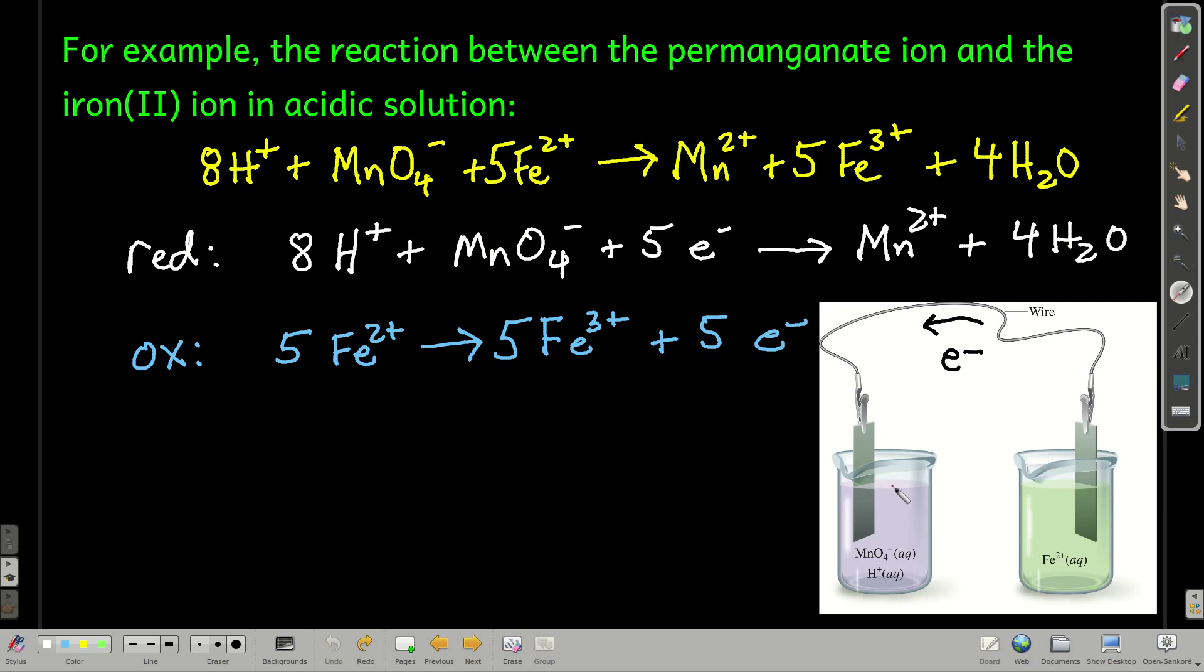But before we do that, let's look at what causes this to even go in the first place. There's a pull on these electrons from the iron by the permanganate. And that permanganate is causing the electrons to flow here. Now, it stops real quickly because the charge builds up. But let's look at what we can do about that.